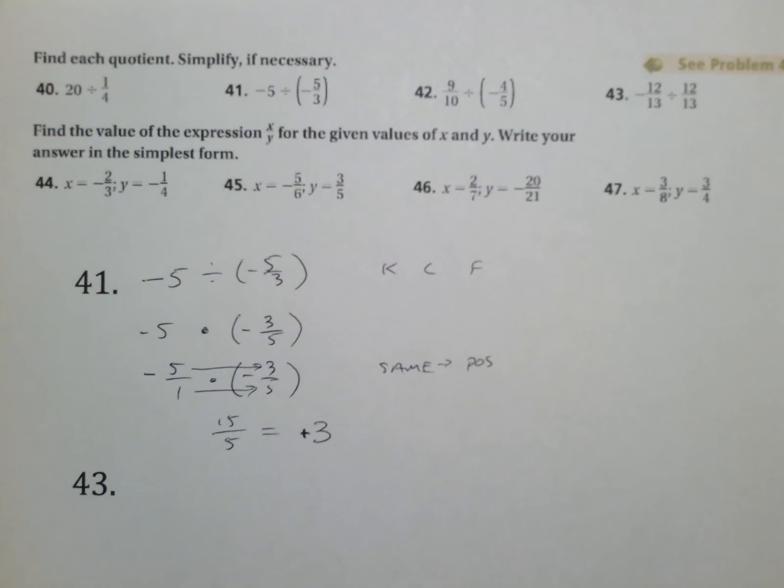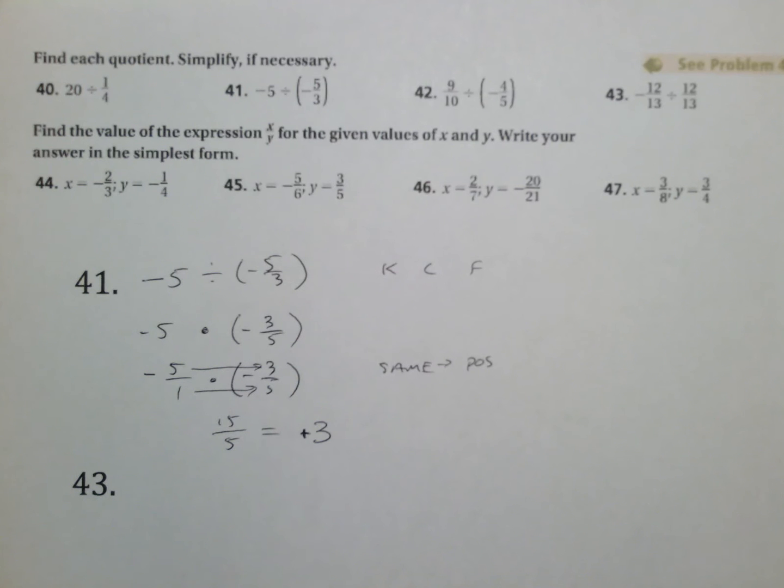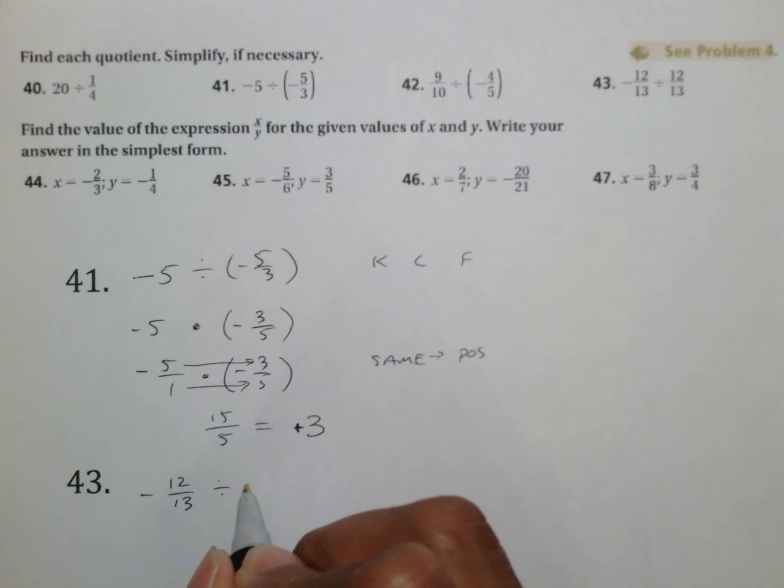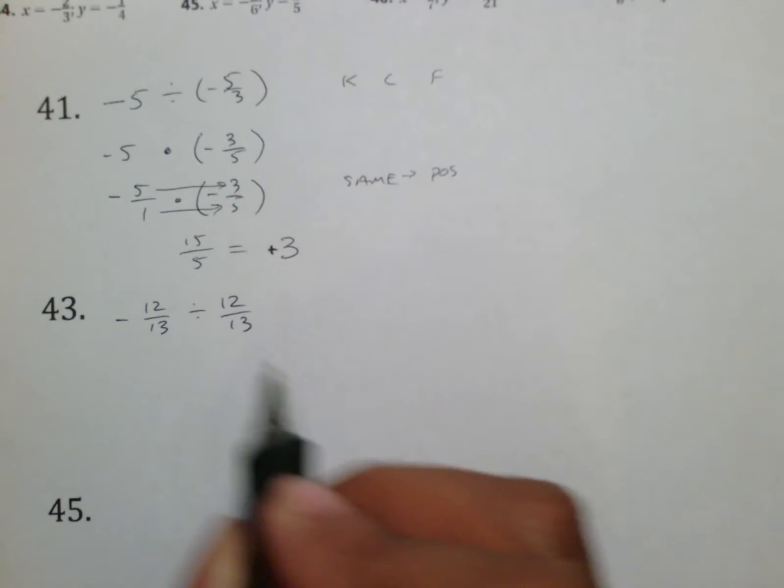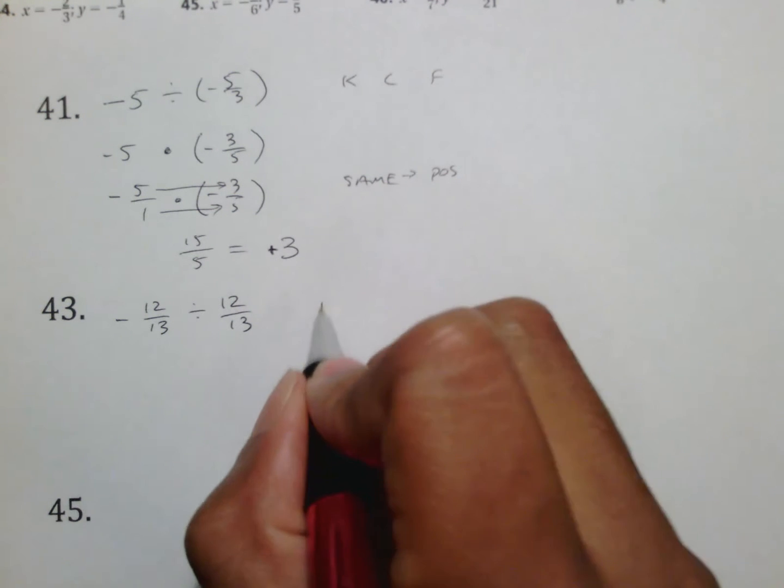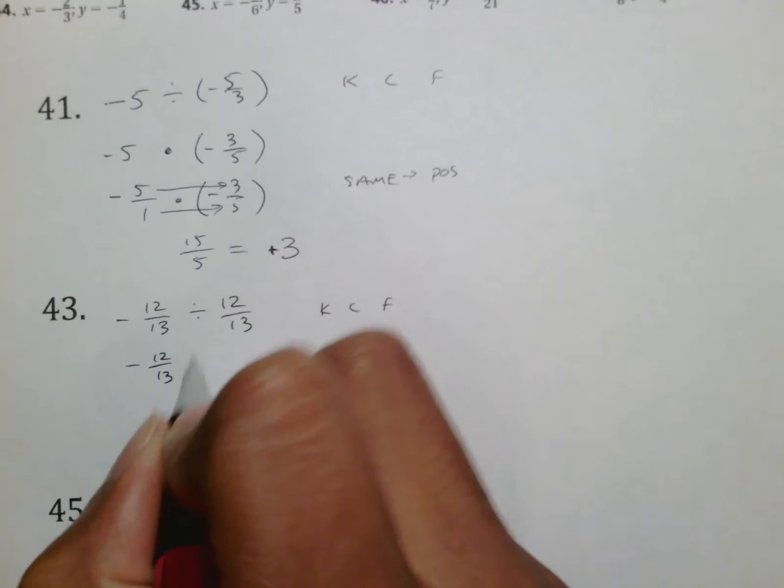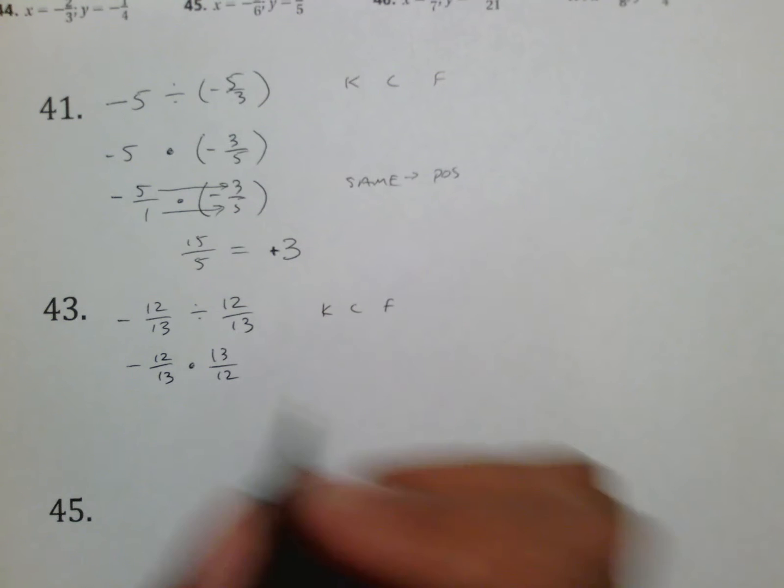But what we are doing here is we are forcing this to be a division question by keeping the first number, changing the sign, and flipping the second fraction. So here we have negative 12 over 13 divided by 12 over 13. Again, we don't know how to divide fractions, but we do know how to multiply fractions. So we keep, change, flip, which means keep this one the same, change this to be multiplication, and flip this to be 13 over 12.